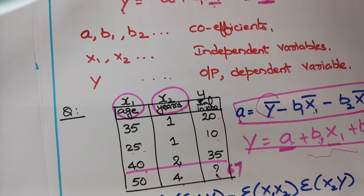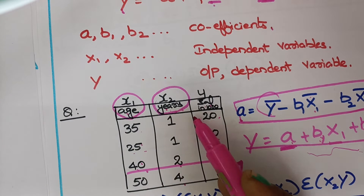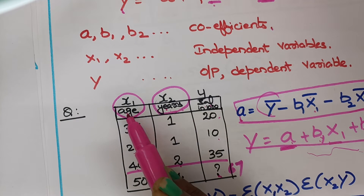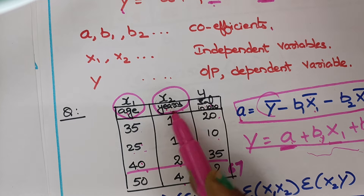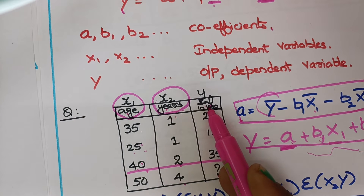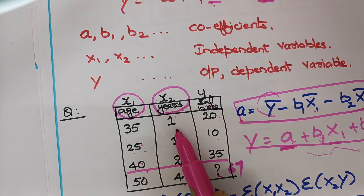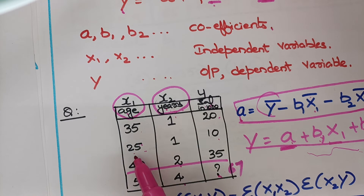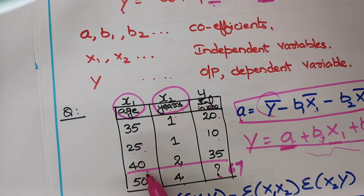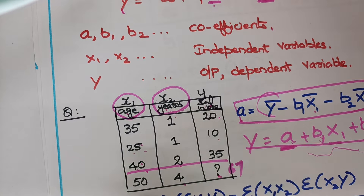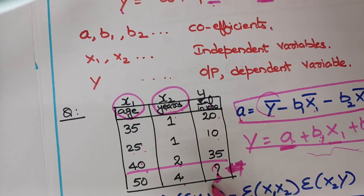We will see one small example. Here age and years of experience are given along with salary. x1 and x2 are both independent variables. Based on x1 and x2 we are going to calculate the y value. For example: age 35, 1 year experience → salary 20,000; age 24, 1 year experience → salary 10,000; age 40, 2 years experience → salary 35,000. If age is 50 and 4 years of experience, how much salary can he expect? That we need to calculate.